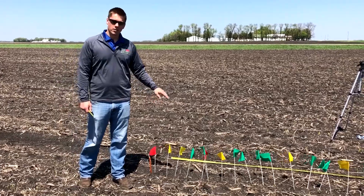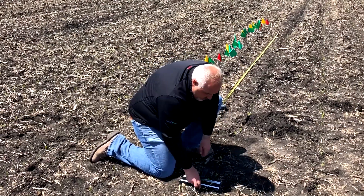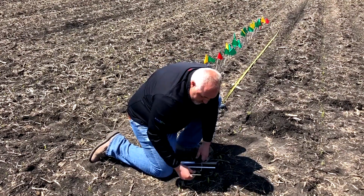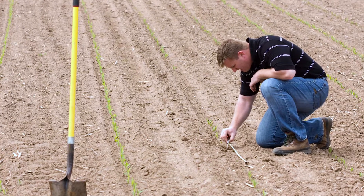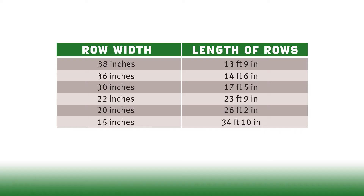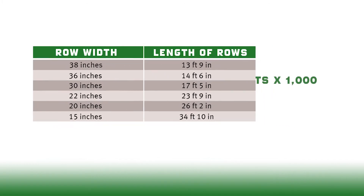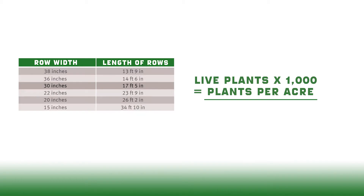When evaluating stand in a cornfield, you want to take several sample counts to represent the entire field. The length of a sample count is determined by row width in the field. Each sample count represents one one-thousandth of an acre. Measure off the distance appropriate for your row width, then count the number of live plants and multiply by one thousand to get an estimate of plants per acre.